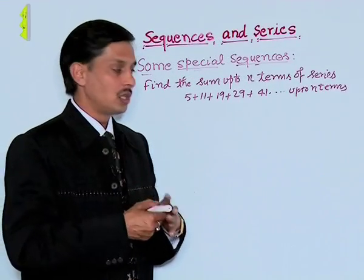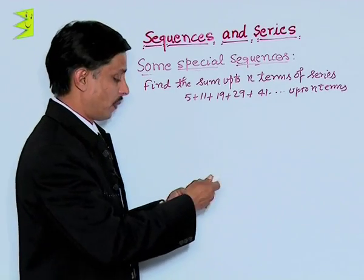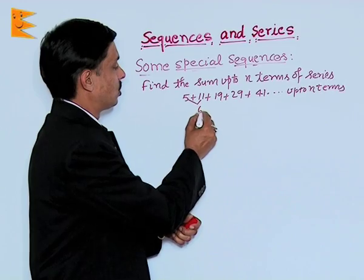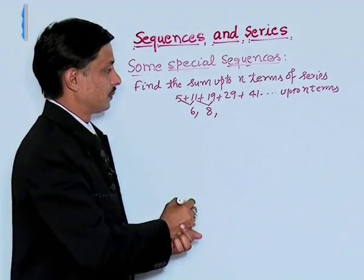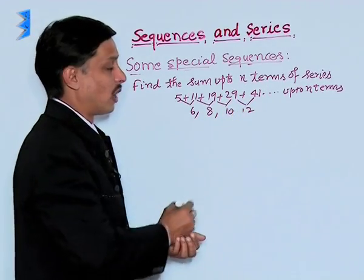Then in such situations we try to find their differences. Difference of 5 and 11 is 6, this difference is 8, this difference is 10, this difference is 12.